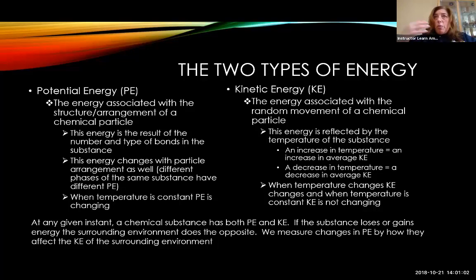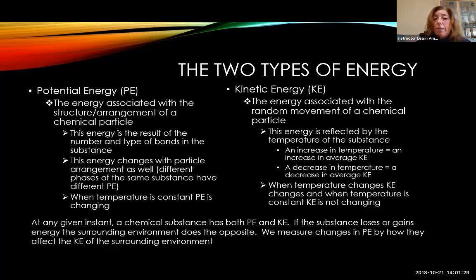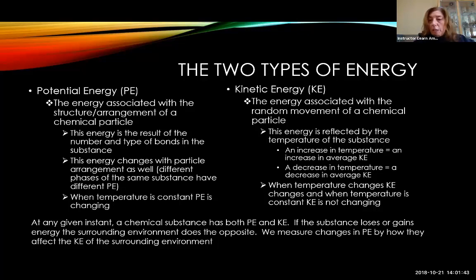Potential energy changes when you're heating a substance and the temperature is remaining constant — we'll talk more about that in the next lecture. Kinetic energy, on the other hand, is the energy associated with movement. Because it is associated with the random movement of particles, kinetic energy is very related to temperature: if temperature increases, kinetic energy will increase, and if temperature decreases, kinetic energy will decrease. If temperature is not changing, the kinetic energy is not changing at all. At any given instant, any chemical substance will have both potential and kinetic energy, and when it undergoes physical or chemical change, its kinetic and potential energies will be lost or gained — but energy is always conserved.